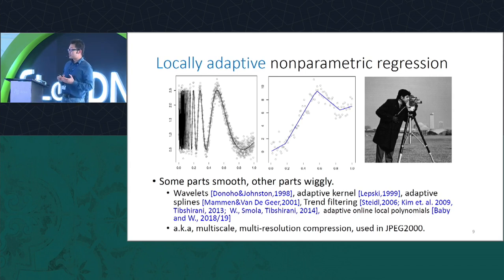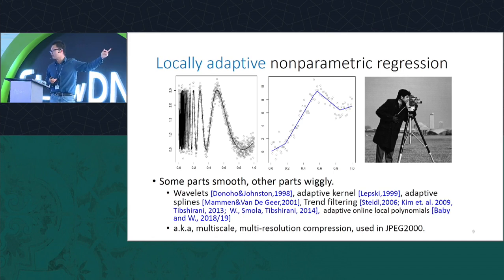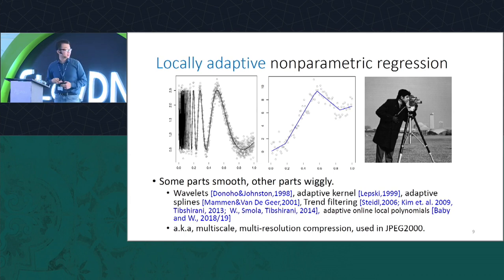We specifically want to consider a smaller family called locally adaptive nonparametric regression, where the underlying function has a heterogeneous level of smoothness across different spatial regions. On the left I'm showing a Doppler-like signal with high-frequency content on the left becoming smoother toward the right. In the middle there's a piecewise linear function that changes quickly at the knots but is very smooth in between. These functions — smoother in some regions and wilder in others — are locally adaptive nonparametric regression problems.